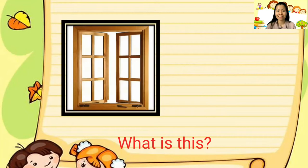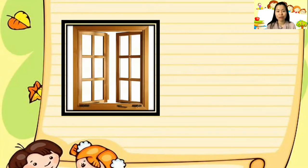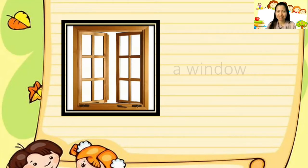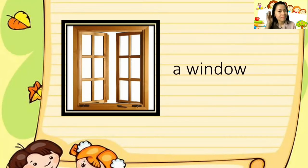What is this? This is a part of our house which we open when we want to see outside without using a door. Yes, it's a window. You're correct. Can you say it again? A window.